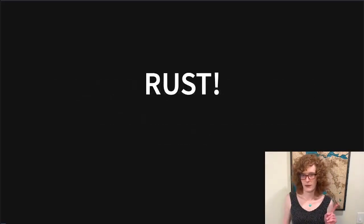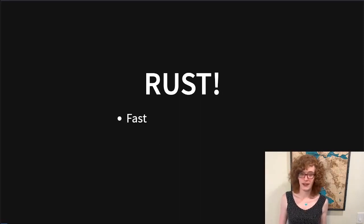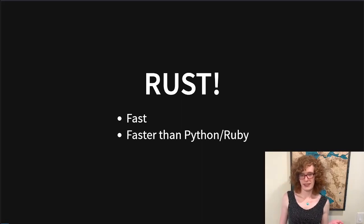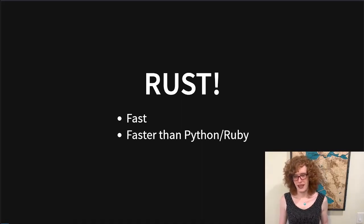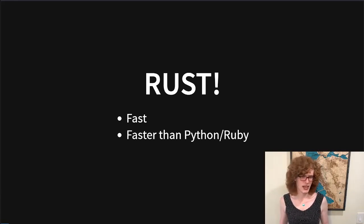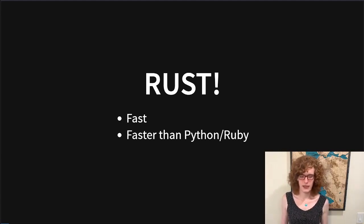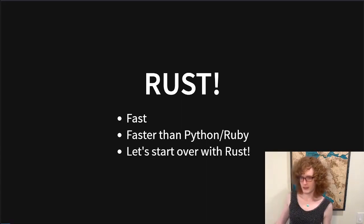If you've heard of Rust before, you have probably heard one thing over and over again: it's pretty fast. It generally performs on par with something like C or C++. It's way faster than some dynamic languages like Python or Ruby. And if you have an older monolithic application written in one of these languages, maybe with something like Django or Rails, then it might be tempting if you're performance-constrained to say, let's start this whole thing over and rewrite it in Rust.